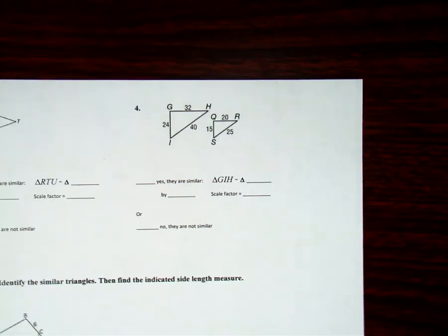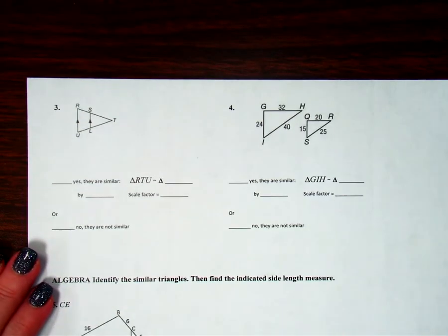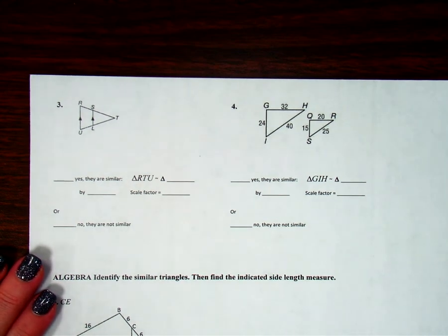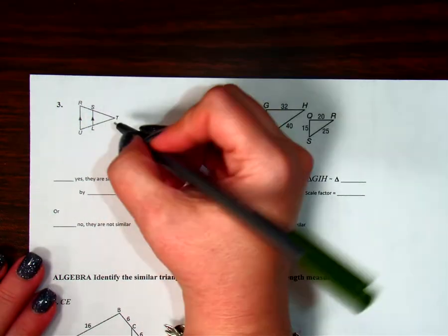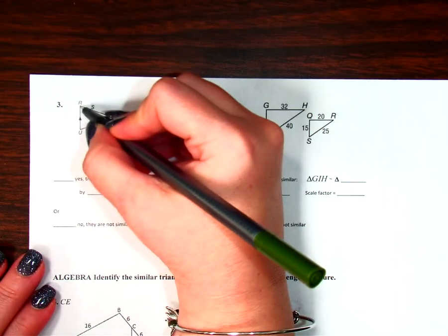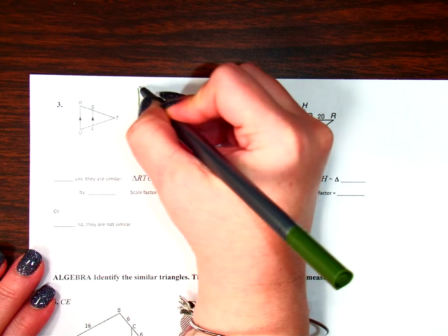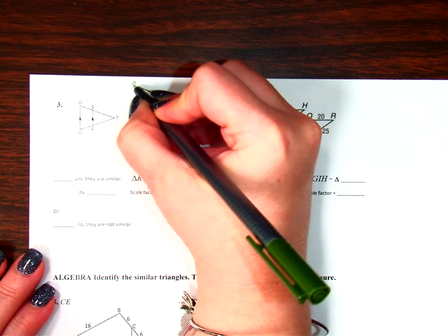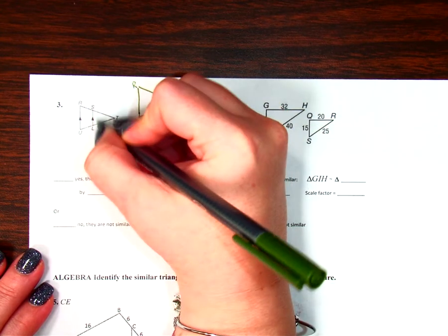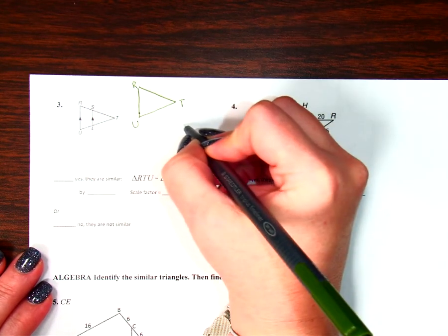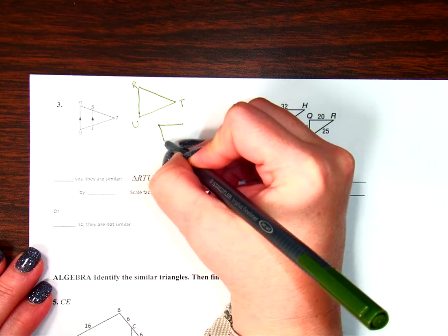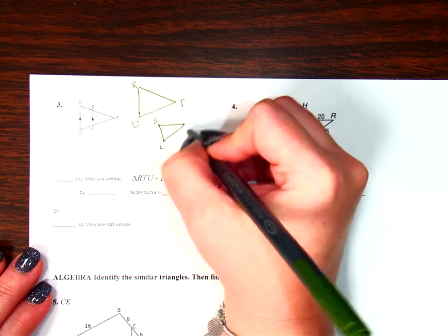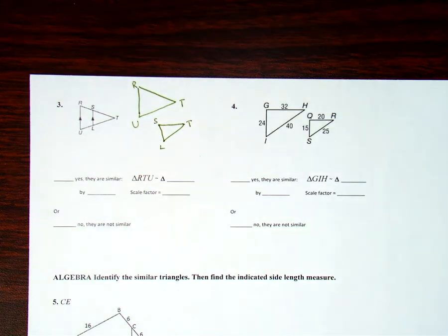Let's look at the third example. So here we have what we call nested triangles. When we do nested triangles, a lot of times what you'll see me do is I will re-sketch each triangle so that I can see a big triangle, which is R, T, U, and then my smaller triangle, which is S, T, L.